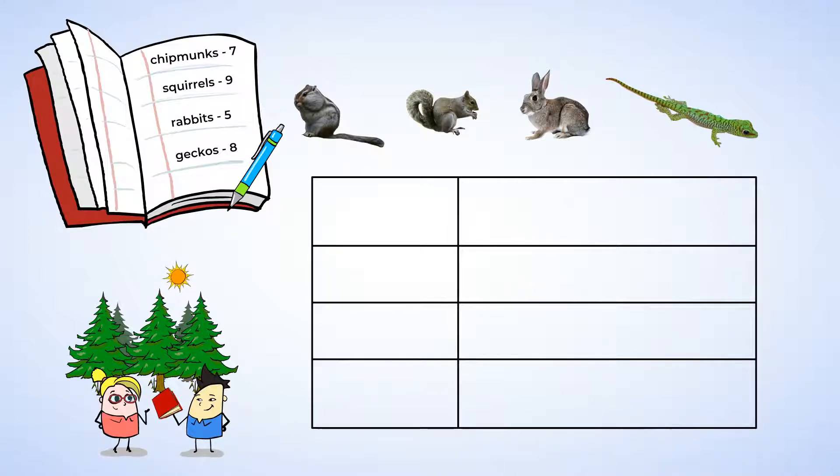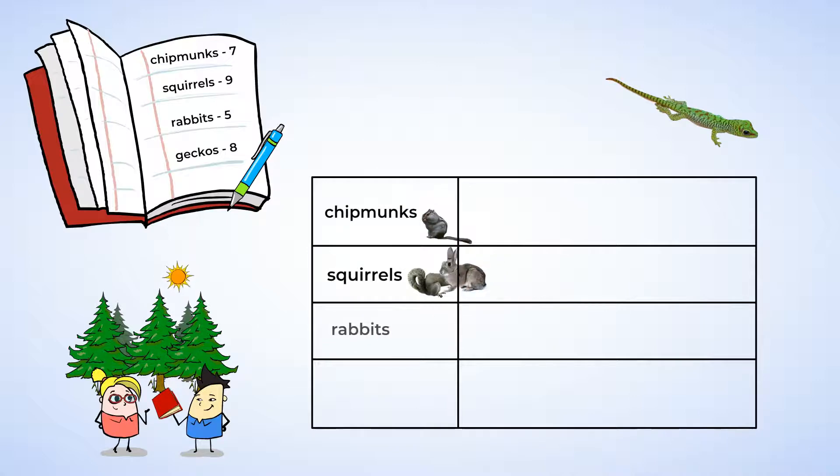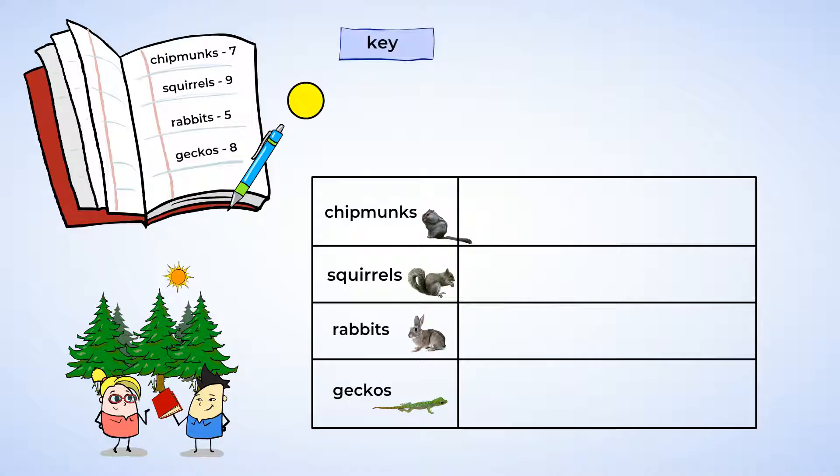Just like before, we can first write the name of each animal. Then, we need to decide on a picture or symbol. In a picture graph, the picture or symbol can be anything. It just needs to be clearly defined in the key. For example, we could choose for our symbol to just be a circle. Let's make one circle equal to one animal and write that in our key.